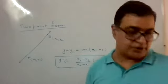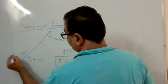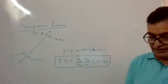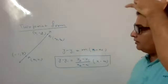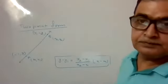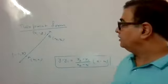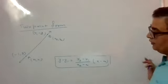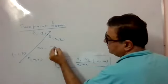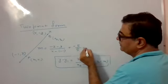Now, questions on it. First question: find the equation of the line joining the points (-1, 3) and (4, -2). First, calculate the slope: that is (-2 minus 3) divided by (4 minus (-1)), which is -5 by 5, giving minus 1.